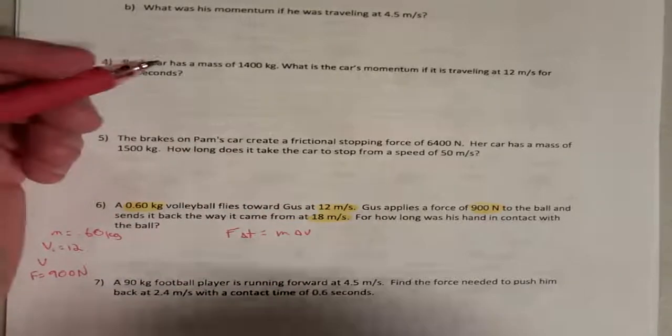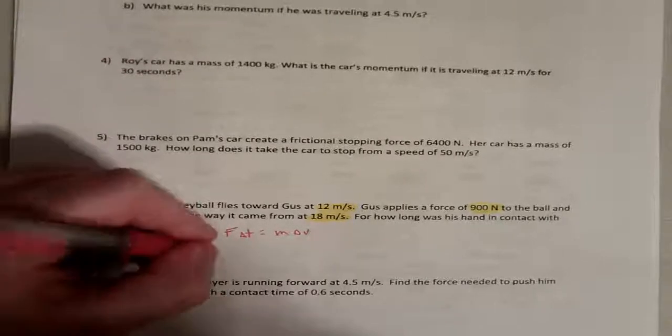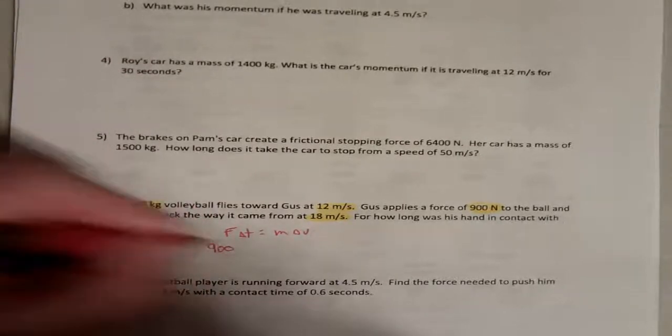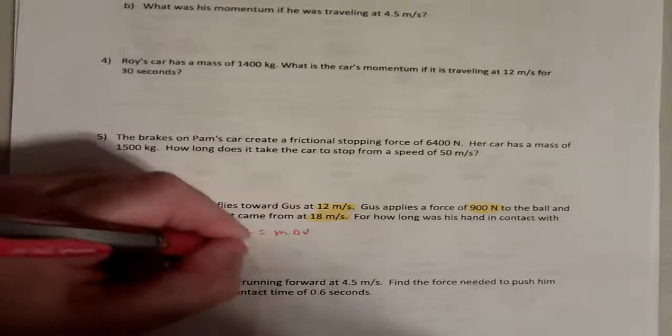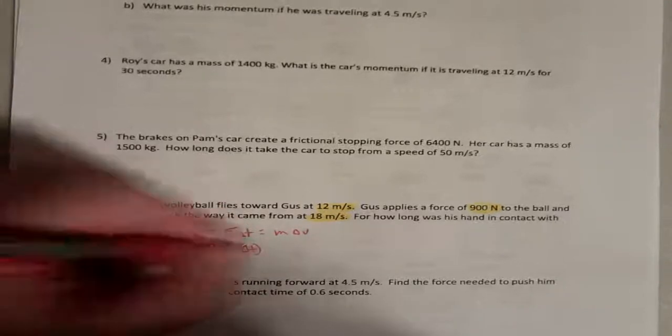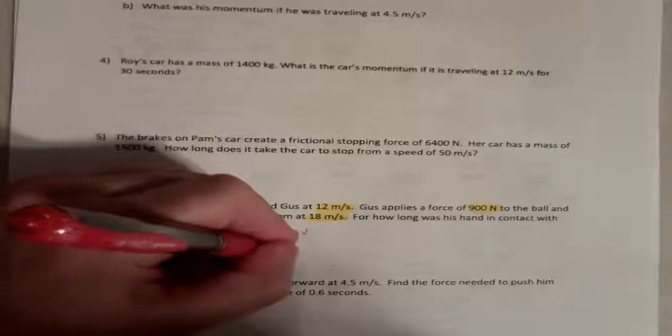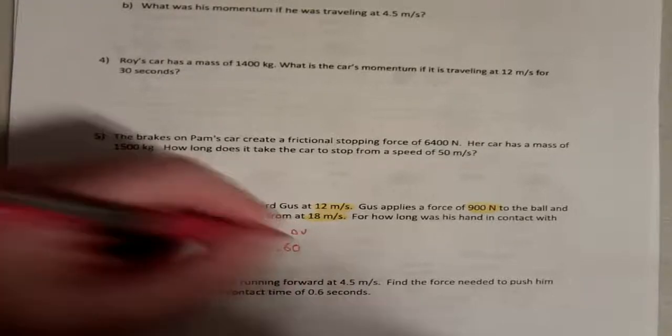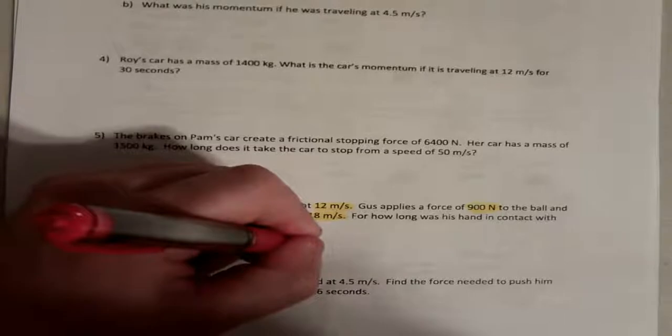There we go. So, let's plug stuff in. Force, 900 newtons times our change in time, which we don't know, equals our mass, 0.6, we'll say 0.60, just so it's easier, times our change in velocity.